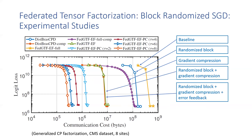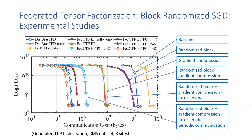Further left, with both randomized block and gradient compression and error feedback, it achieves a reduction of almost 99% compared to the baseline. Finally, combined with periodic communication, the cost is further reduced.